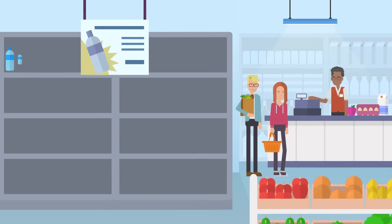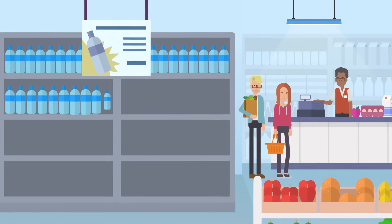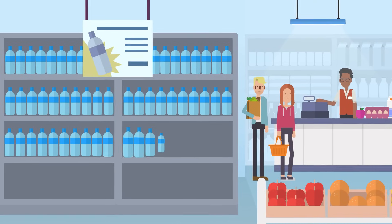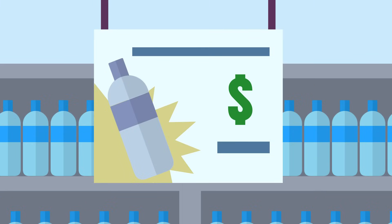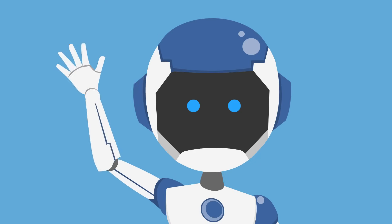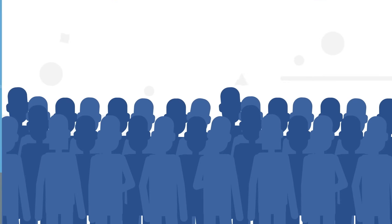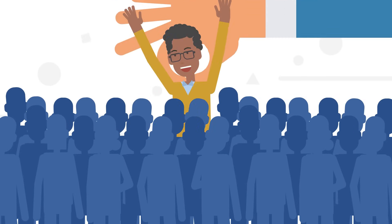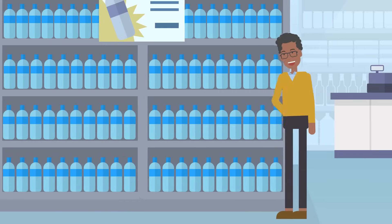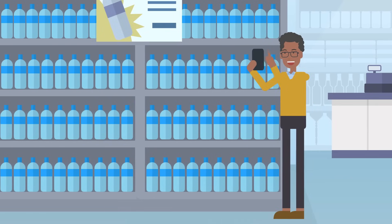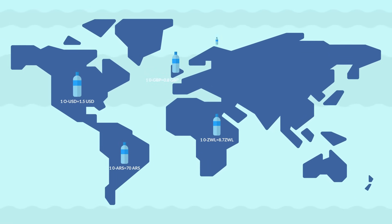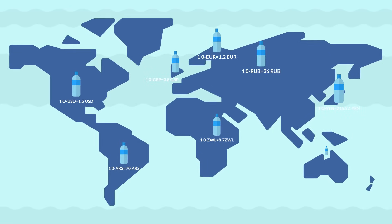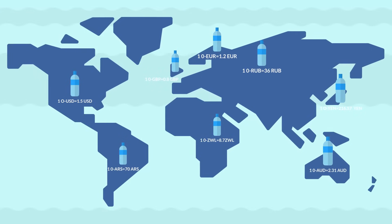First, in order to set the value of the O currency and provide a real-time exchange rate of the coin with all other currencies, we need to know in real-time the average price of one liter of drinkable water sold separately. To do so, we will use online bots that will monitor online water pricing, as well as users who will randomly be picked by the blockchain to perform a measurement by submitting a picture in a retail store or to validate a previous measurement. At this point, the blockchain will be able to provide a real-time exchange rate of O coins with all currencies based on the average price of one liter of water sold separately.